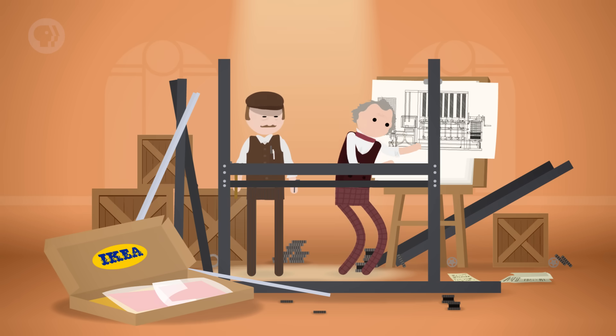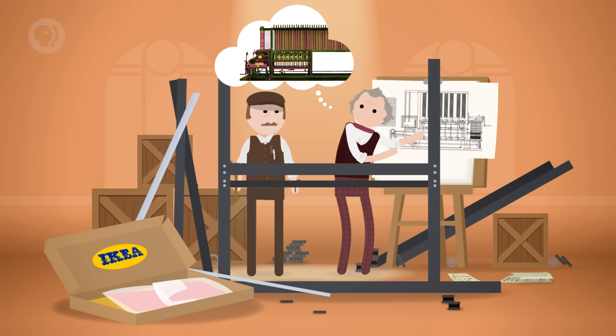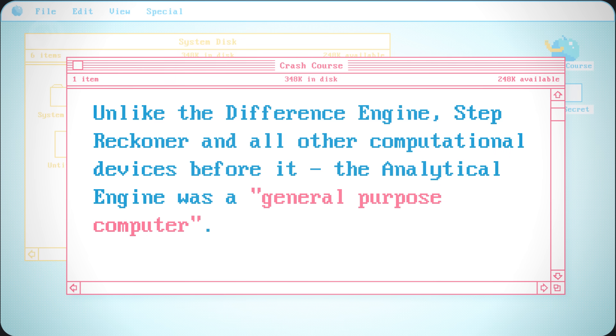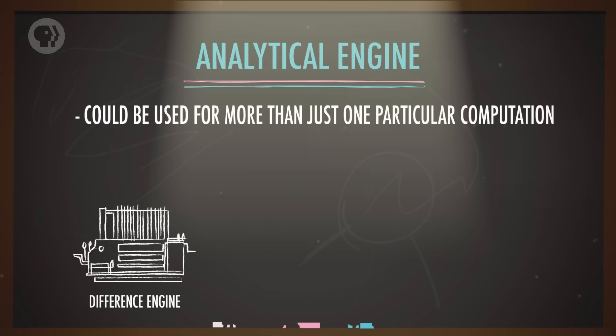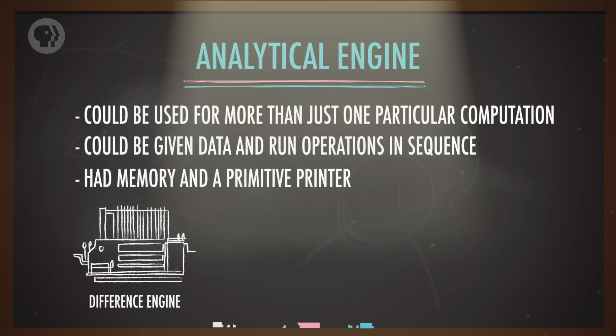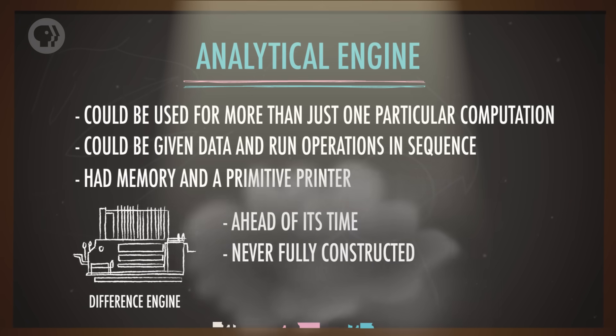But more importantly, during construction of the Difference Engine, Babbage imagined an even more complex machine – the Analytical Engine. Unlike the Difference Engine, Step Reckoner and all other computational devices before it, the Analytical Engine was a general-purpose computer. It could be used for many things, not just one particular computation. It could be given data and run operations in sequence, it had memory and even a primitive printer. Like the Difference Engine, it was ahead of its time, and was never fully constructed.